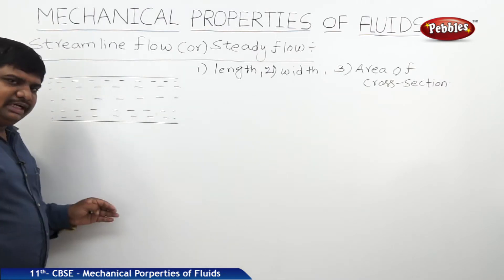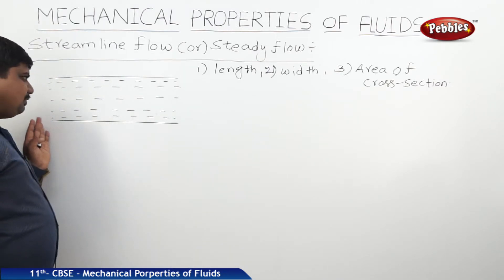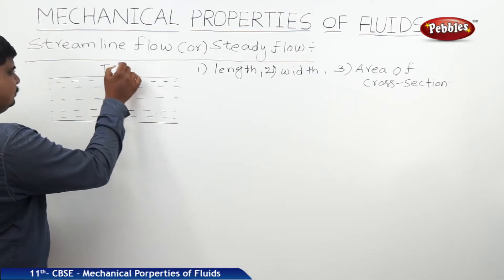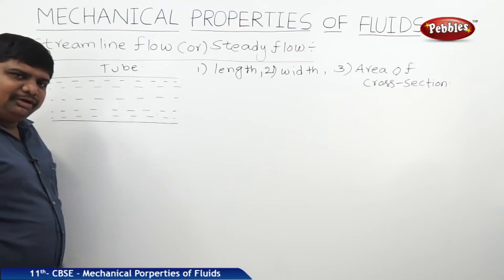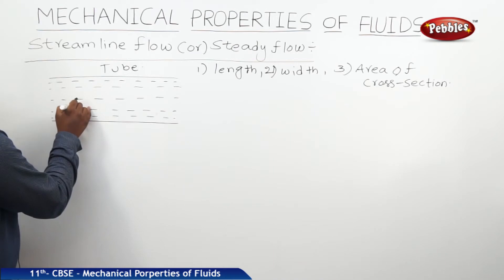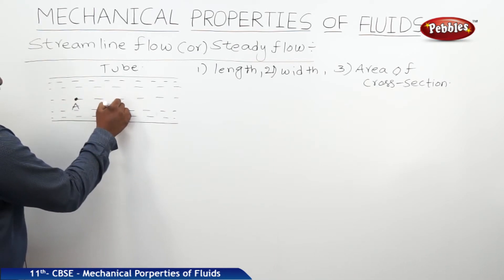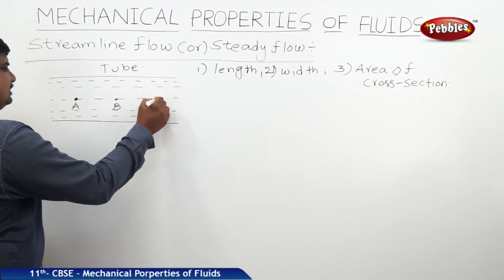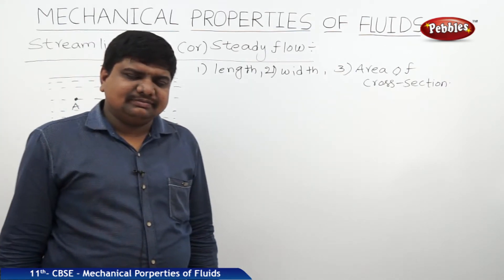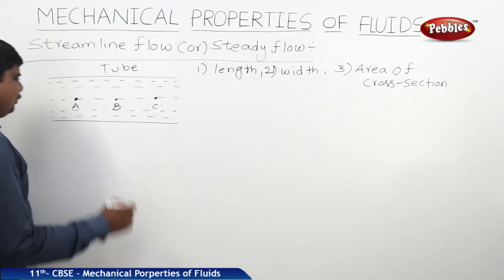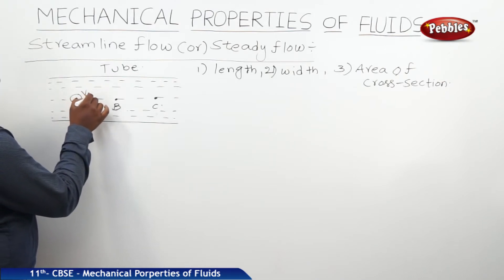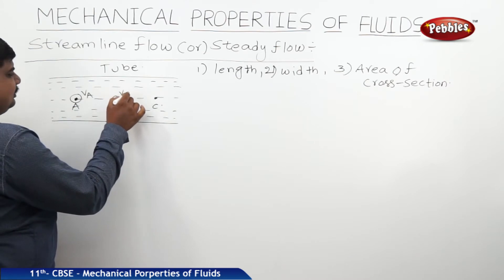Whenever some amount of fluid — nothing but the water — is moving from one end of the tube to the another end of the tube, try to pick three points in its path. Let us say this point is A, this point is B, and this point is C. A, B, C are the three reference points. At these three points, the velocity of this fluid is respectively V_A, V_B, and V_C.